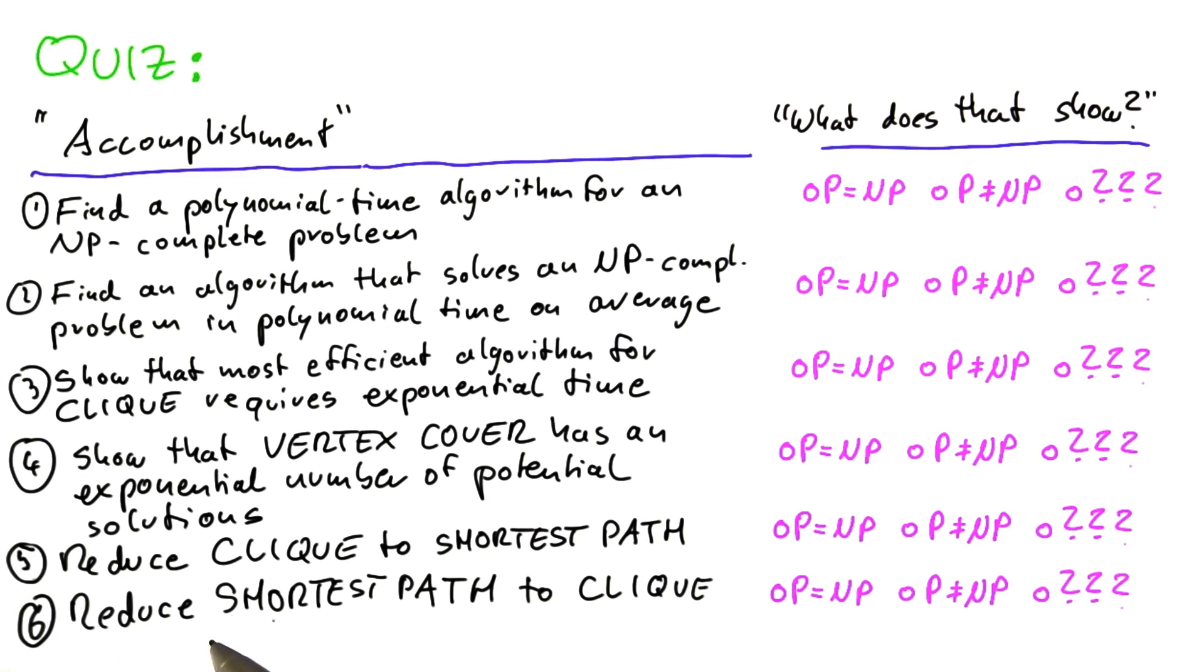Or what if you could show that any shortest path problem in a graph can be solved by solving clique in a transformed graph? Please make your selection.